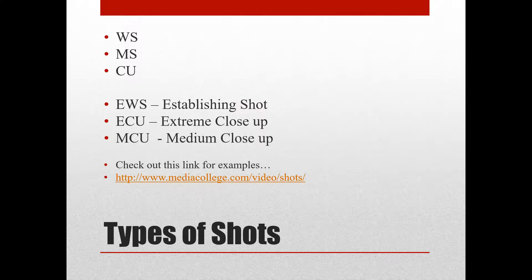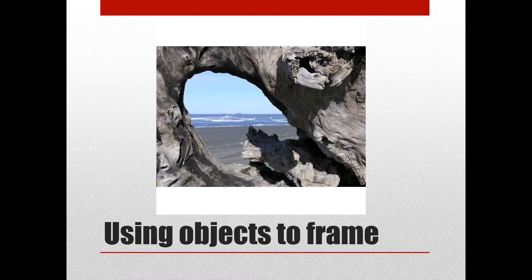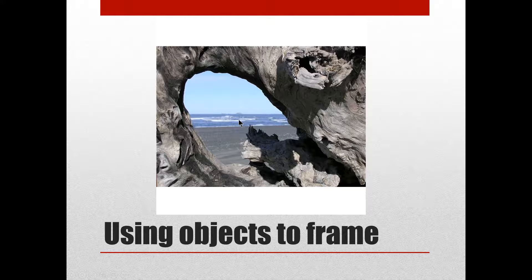We have some different shots we'll come back to in a minute. As a review, we have object framing — we looked at that with the mirror in the car and some other examples. The idea of having something frame your image is what we call object framing. Here's a nice image of a beach being framed by a piece of driftwood.